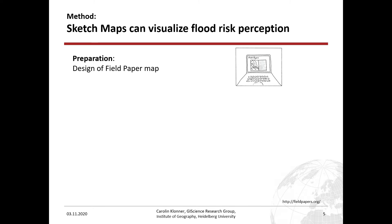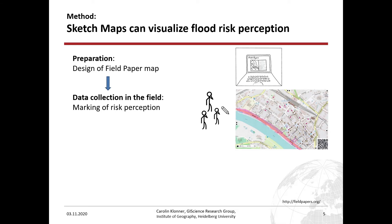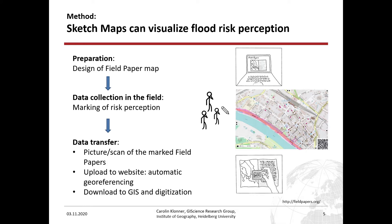First of all, there are the OpenStreetMap field papers, and these papers are used as a base map. You can design a field paper map online of your study area and then go into the field where participants can mark their risk perception on this map. Here you see an example of Eberbach where the base is the OpenStreetMap field paper map and people marked their perception in pink — this marked map I call a sketch map. Afterwards, you can take a picture or scan the field paper and upload it to the website where it is automatically georeferenced, and then you can use it for digitization.